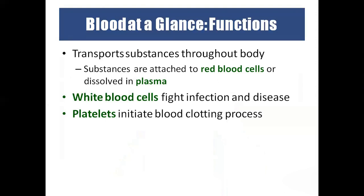This topic is about blood and the lymphatic system. First, blood: whatever needs to be transported in our body — oxygen, carbon dioxide, hormones, enzymes, waste products such as urea, uric acid, ammonia, nitrogenous waste products, bicarbonate ions, protons — everything gets transported through the blood. Blood acts as a medium for transporting substances, and it is called liquid connective tissue because it connects one region of the body to another.